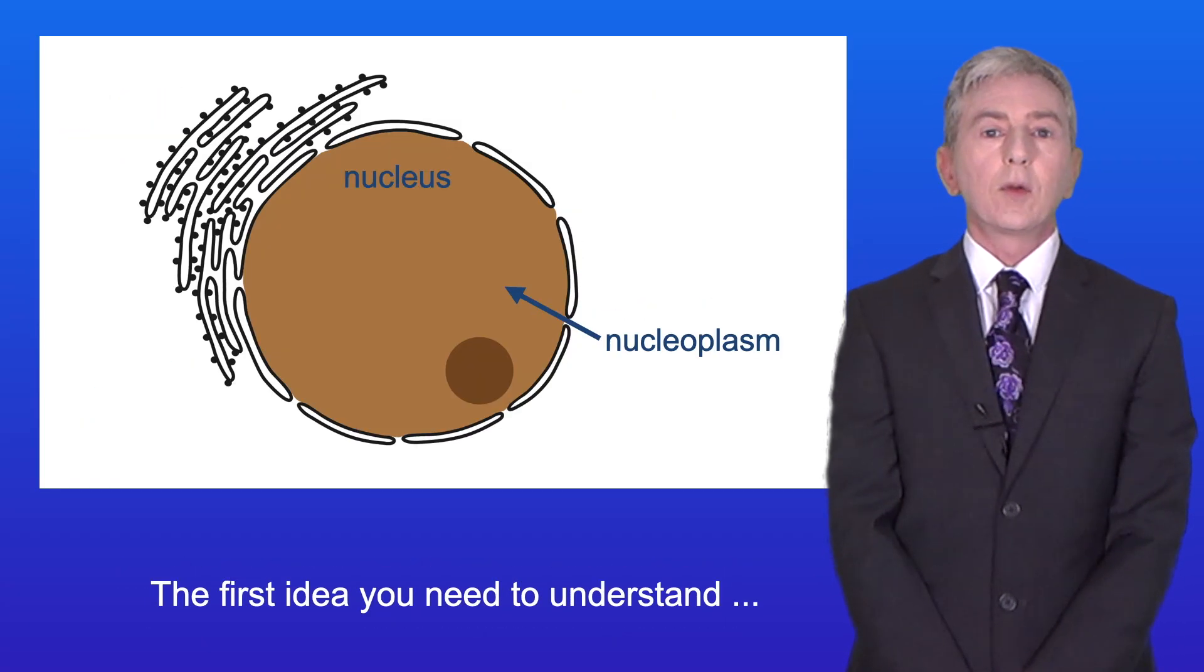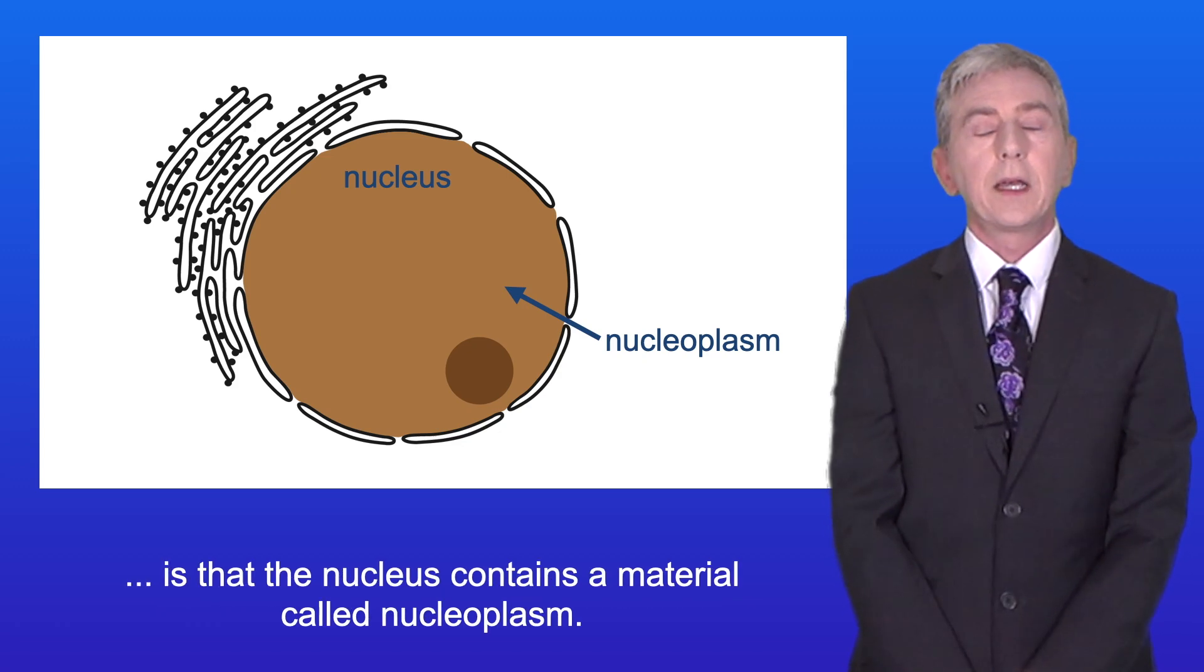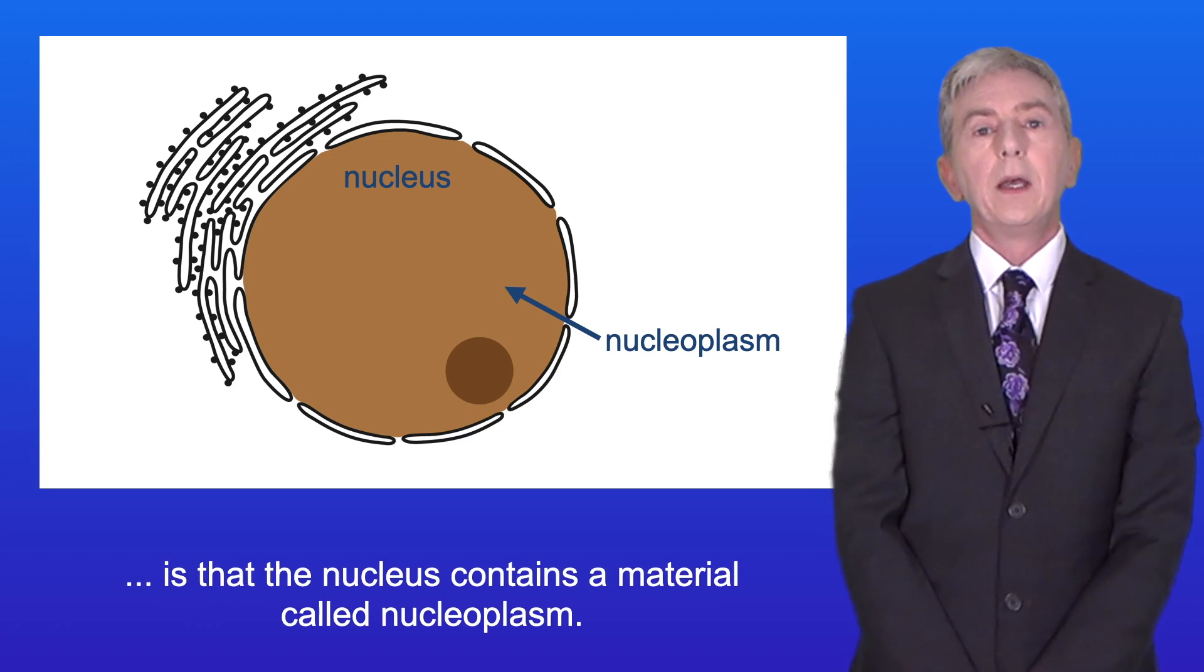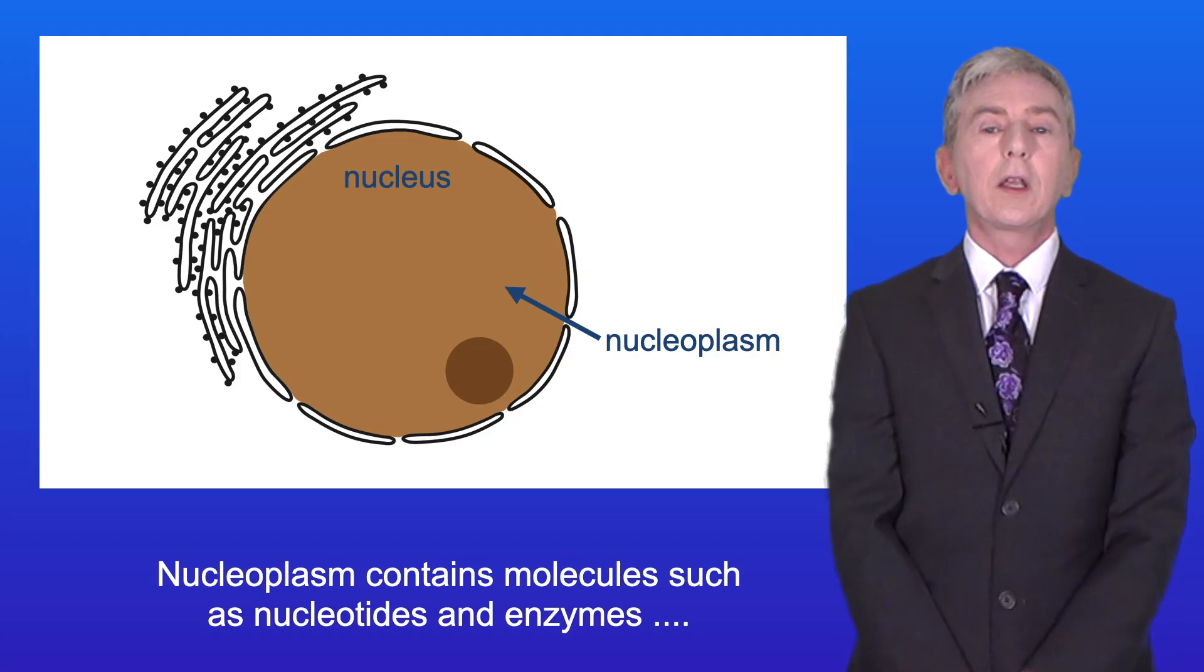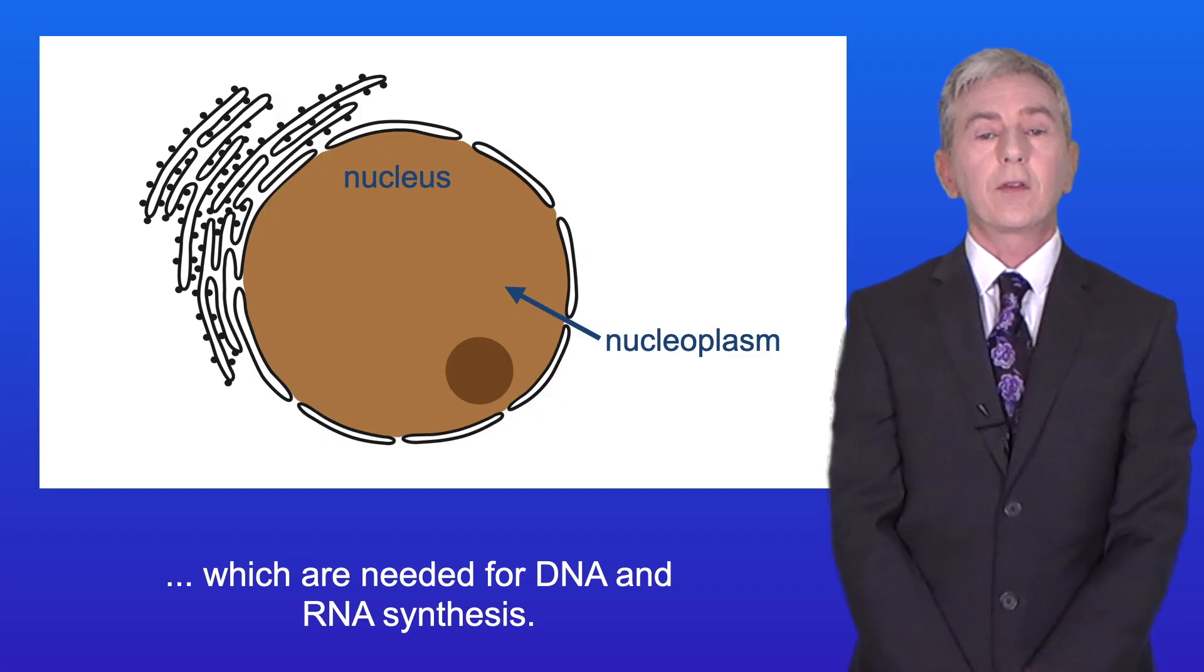The first idea you need to understand is that the nucleus contains a material called nucleoplasm. Nucleoplasm contains molecules such as nucleotides and enzymes which are needed for DNA and RNA synthesis.